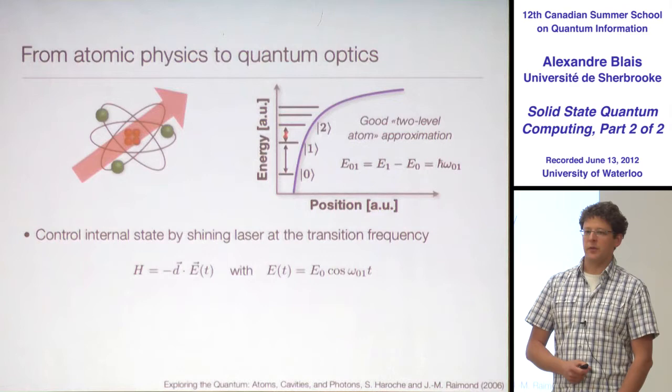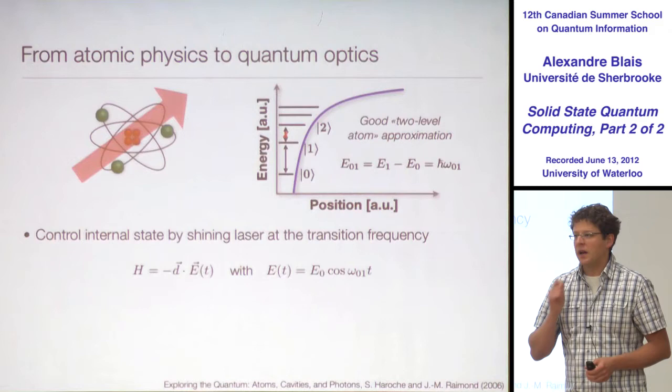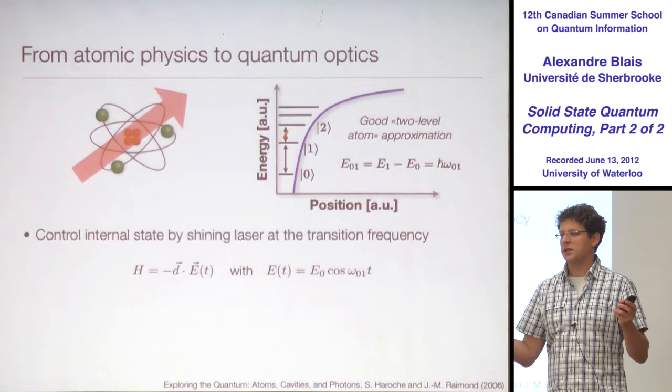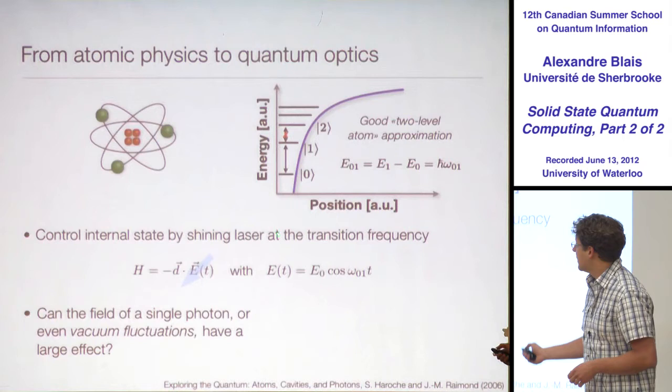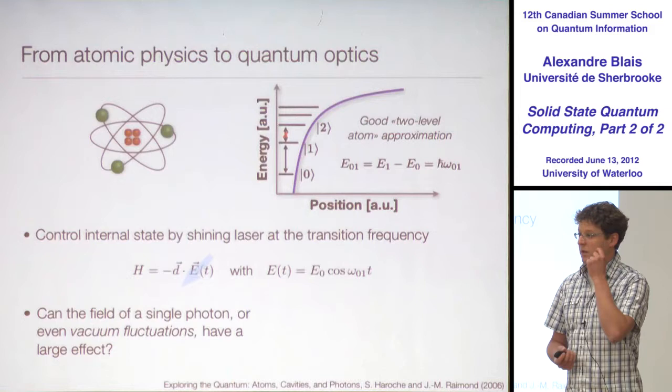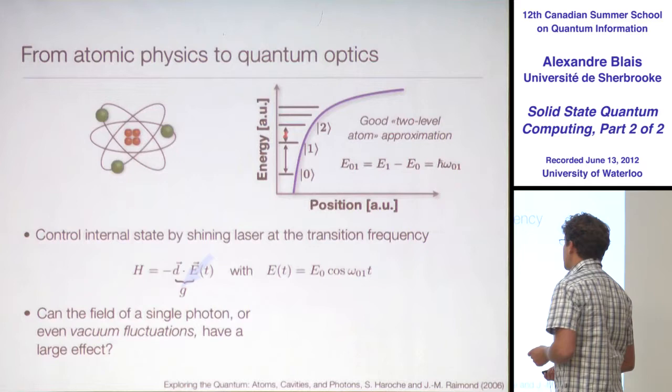So far, what we've been doing is basically atomic physics with artificial atoms — shining bright lasers on these artificial atoms and looking at their spectroscopy. Now what we'd like to do is move from atomic physics to quantum optics: removing this laser, tuning down the electric field a lot. We'd like our artificial atoms to interact with a single photon, or even with the vacuum.